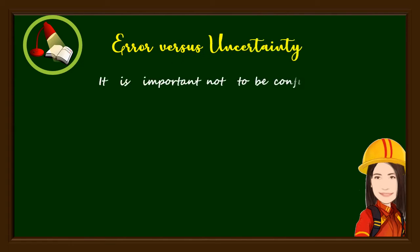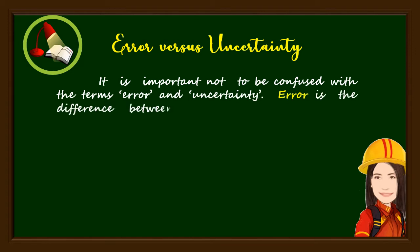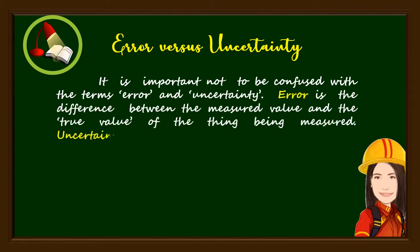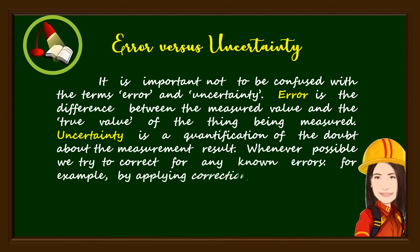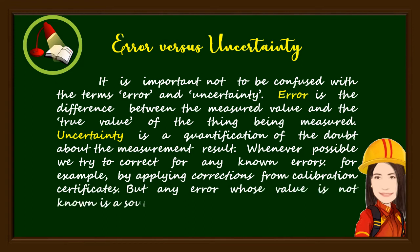It is important not to be confused with the terms error and uncertainty. Error is the difference between the measured value and the true value of the thing being measured. Uncertainty is a quantification of the doubt about the measurement result. Whenever possible, we try to correct for any known errors, for example, by applying corrections from calibration certificates. But any error whose value is not known is a source of uncertainty.